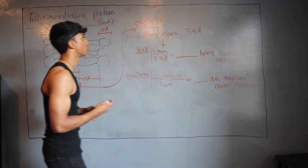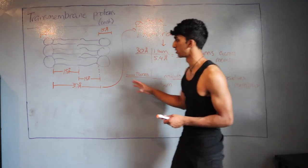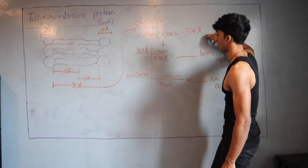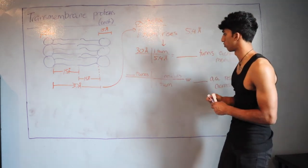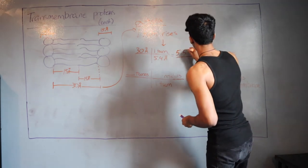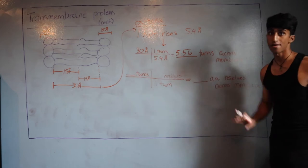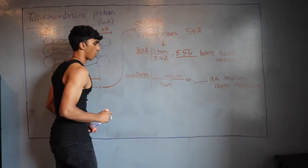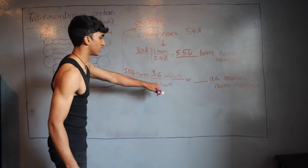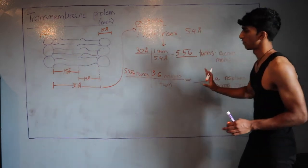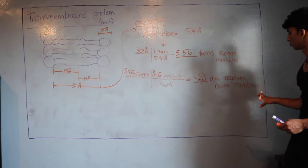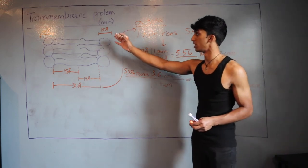To find how many amino acids span the membrane, we know one turn of an alpha helix rises 5.4 angstroms. So: 30 angstroms × (1 turn / 5.4 angstroms) = 5.56 turns. We also know there are 3.6 residues per turn. So 5.56 turns × 3.6 residues/turn = about 20 amino acid residues to span the membrane for a transmembrane alpha helix.